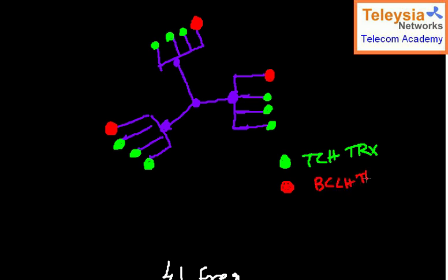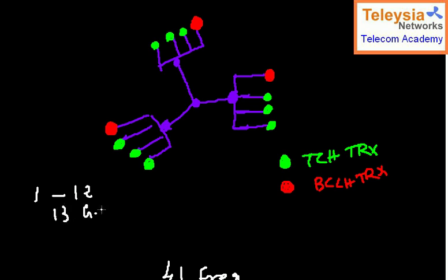Let us do a small frequency plan. We have frequencies 1 to 12 for BCCH. Frequency 13 is not used — we skip it as the guard band. Frequencies 14 to 41 are for TCH.